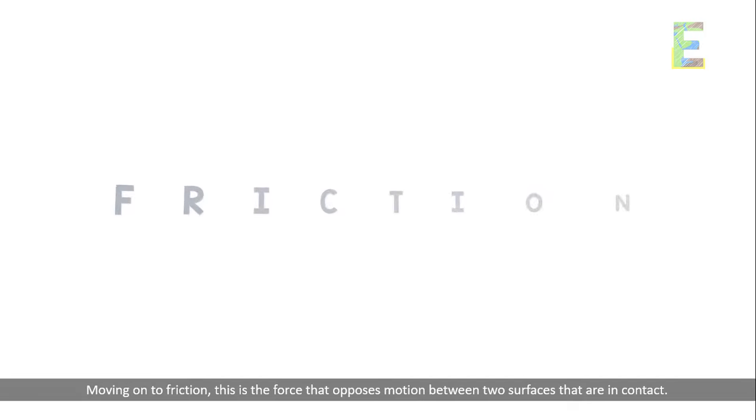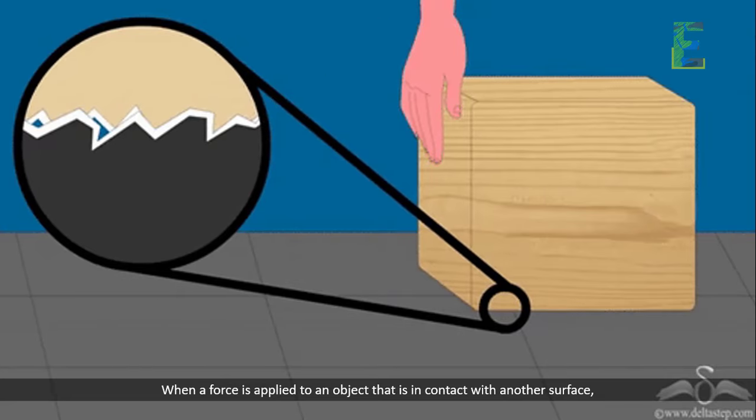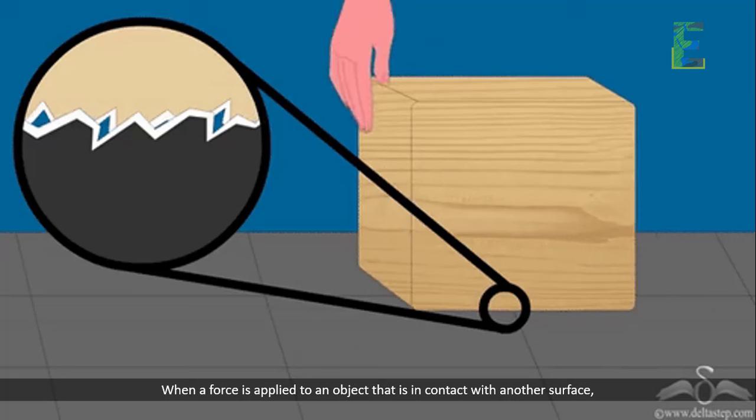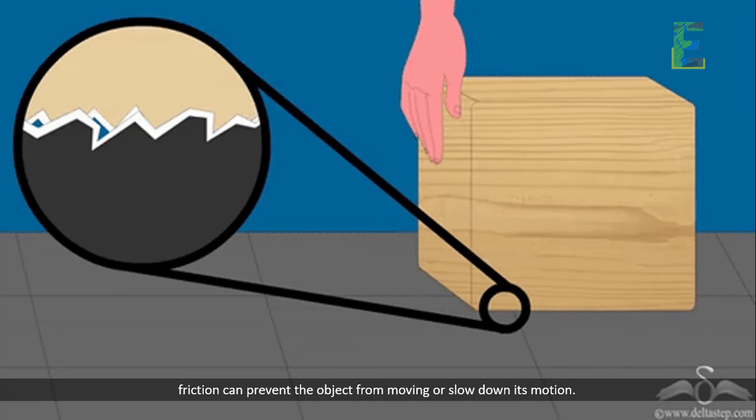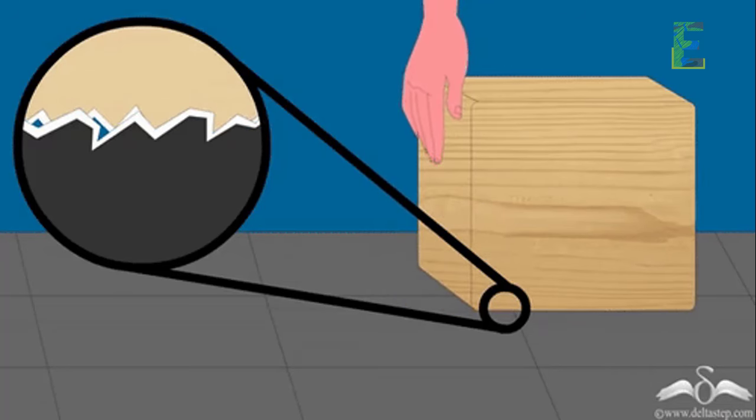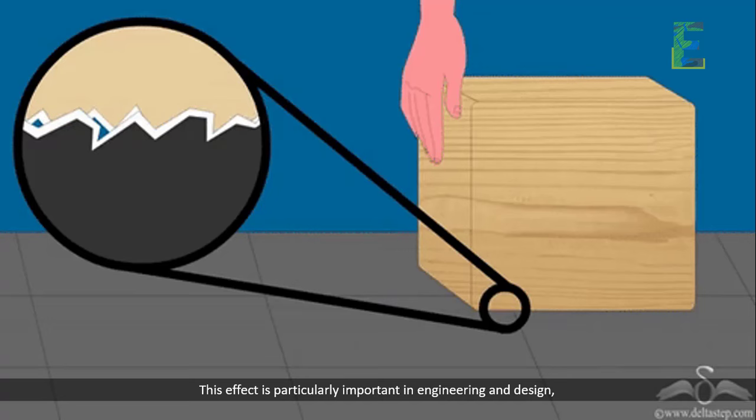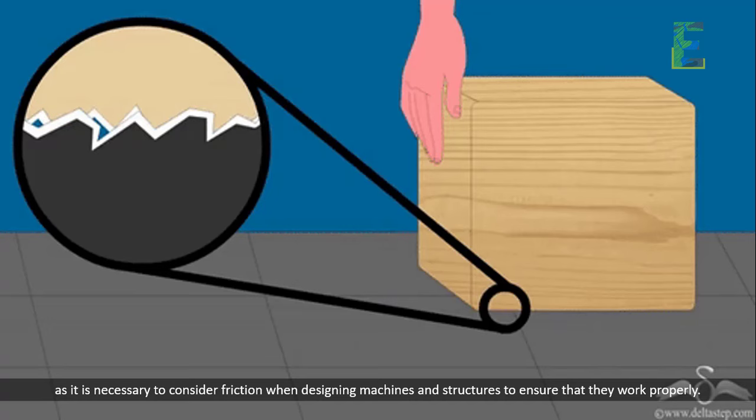Moving on to friction, this is the force that opposes motion between two surfaces that are in contact. When a force is applied to an object that is in contact with another surface, friction can prevent the object from moving or slow down its motion. This effect is particularly important in engineering and design, as it is necessary to consider friction when designing machines and structures to ensure that they work properly.